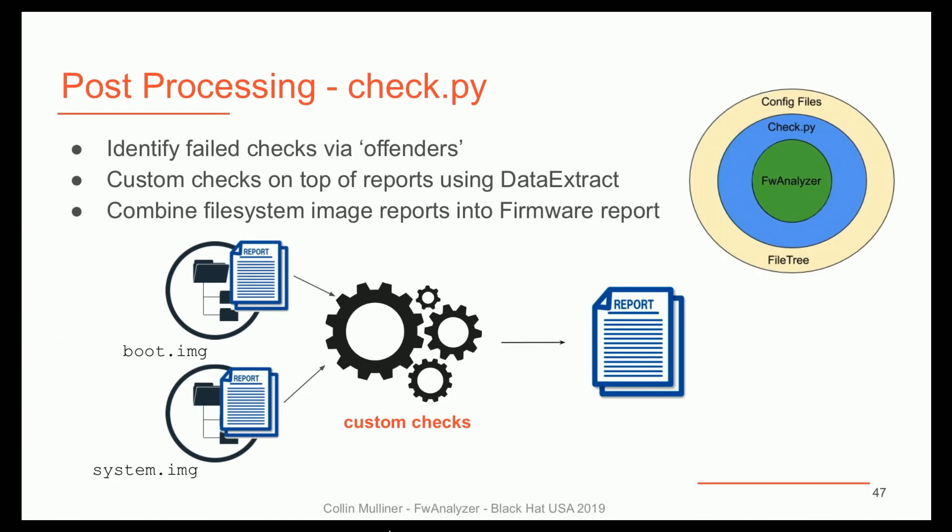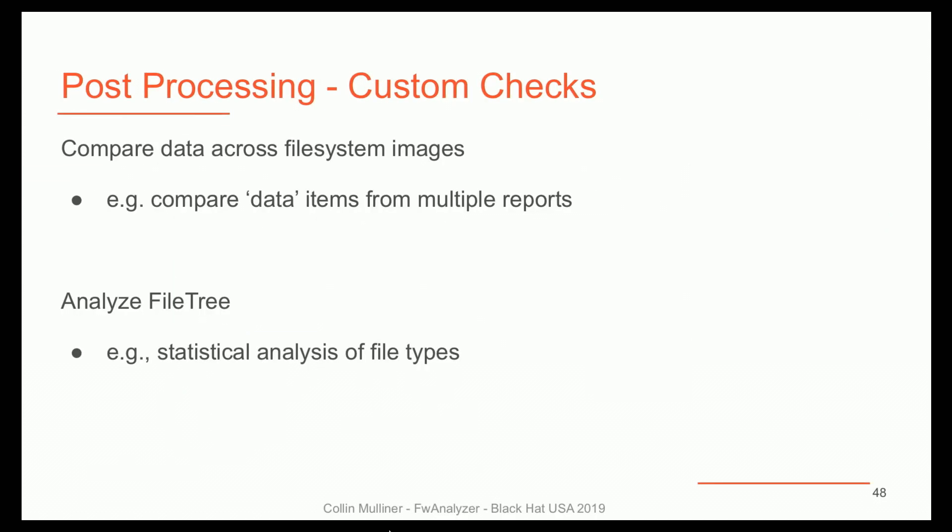Now that we have all the different checks configured, the post-processing is basically where you say: okay, we extracted the firmware, we ran the tool, we got reports for each different file system, and then we can maybe do some checks on top — extract data or combine the reports. You can do stuff like compare values across different file systems, do statistics and analysis of file types, and so on. There are a lot of different things you can do here.